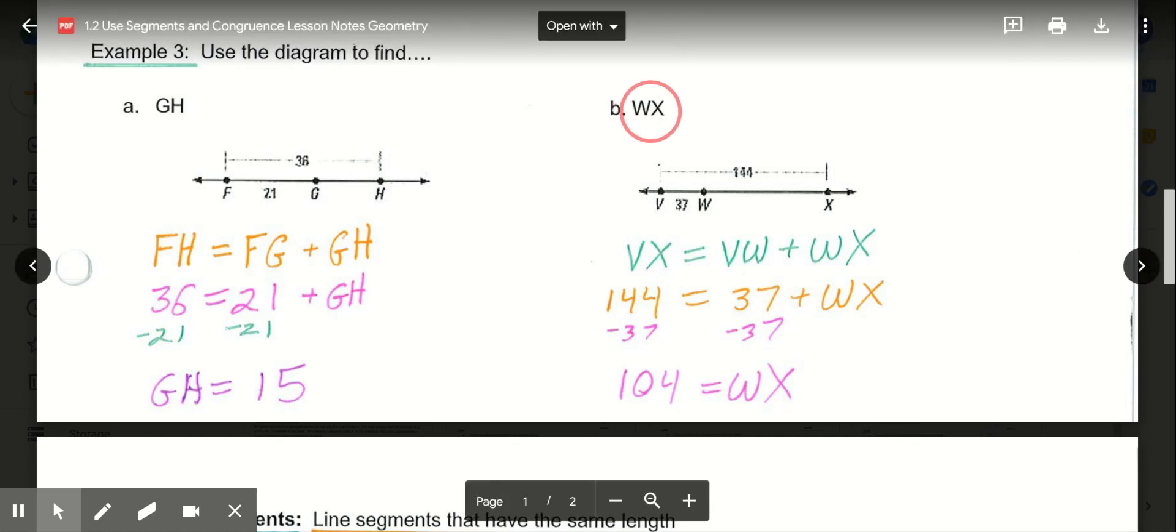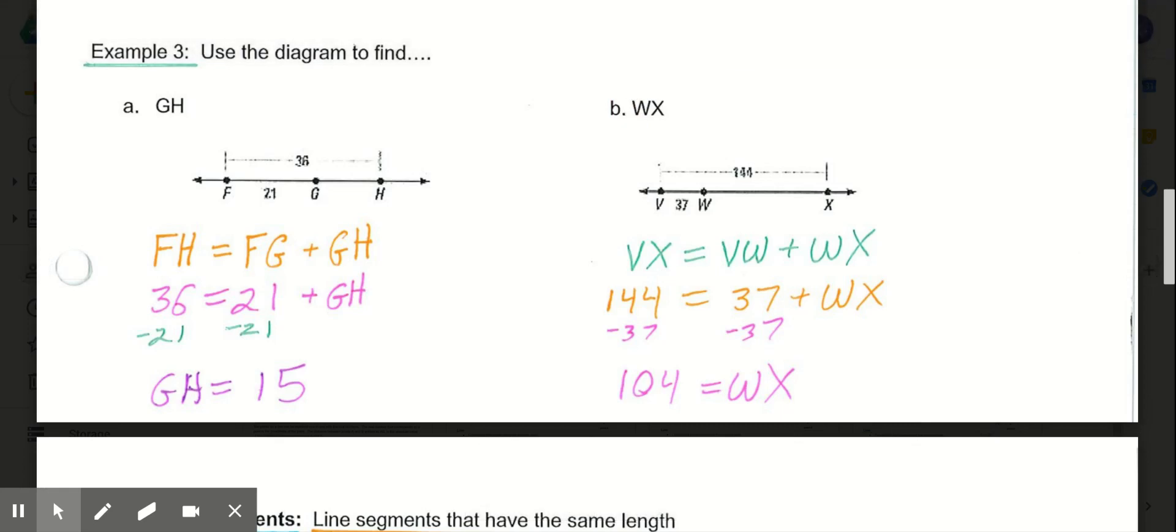Then in part B, we're looking for the distance WX. In this case, W is between V and X. So I know the segment VW plus the segment WX will equal the whole segment of VX. So that's our setup. And then we can replace what we know. So 144 goes in for VX. VW gets replaced by 37, and we're trying to figure out WX. So we can solve for WX by subtracting our 37 from each side, and we know WX is then 104 units.